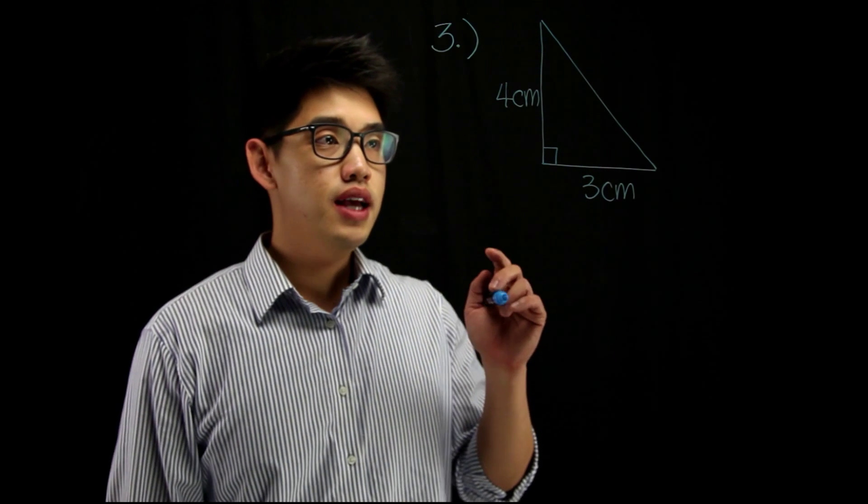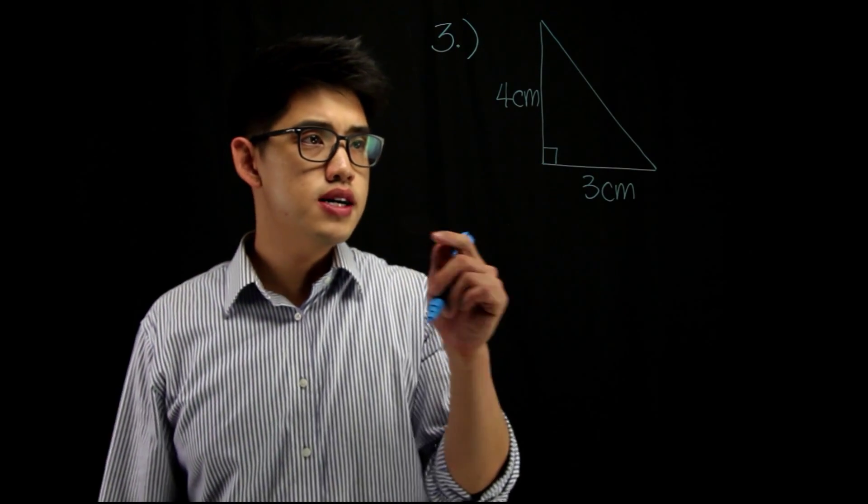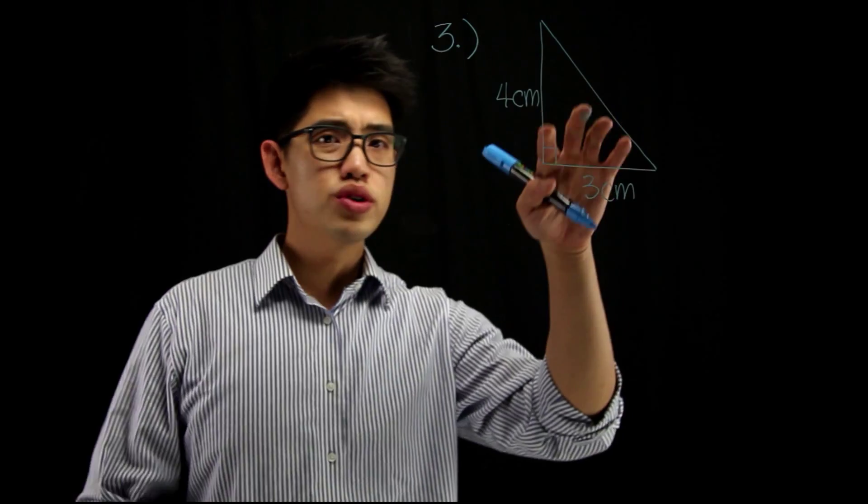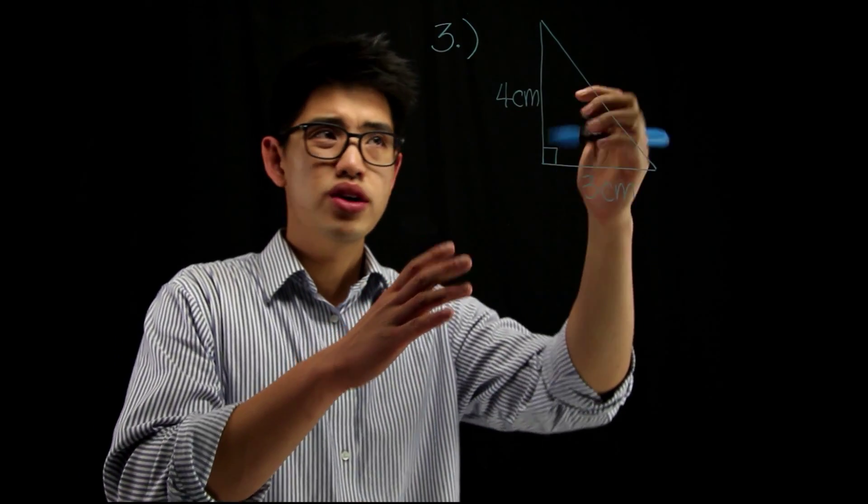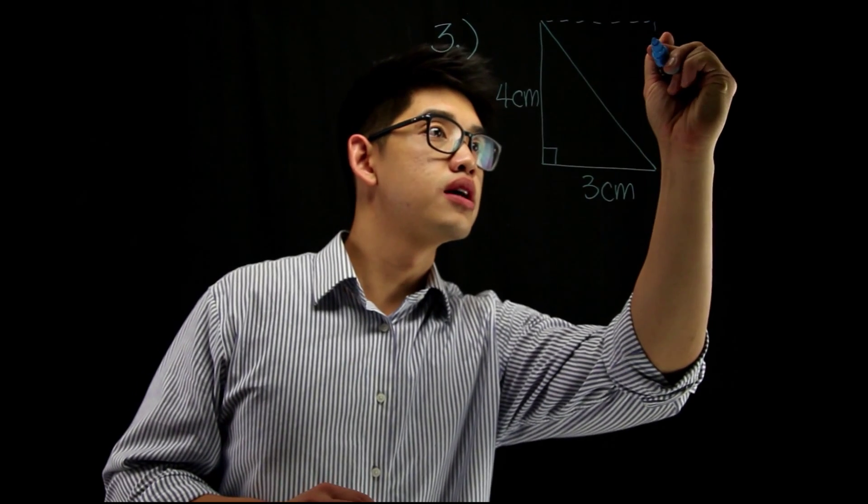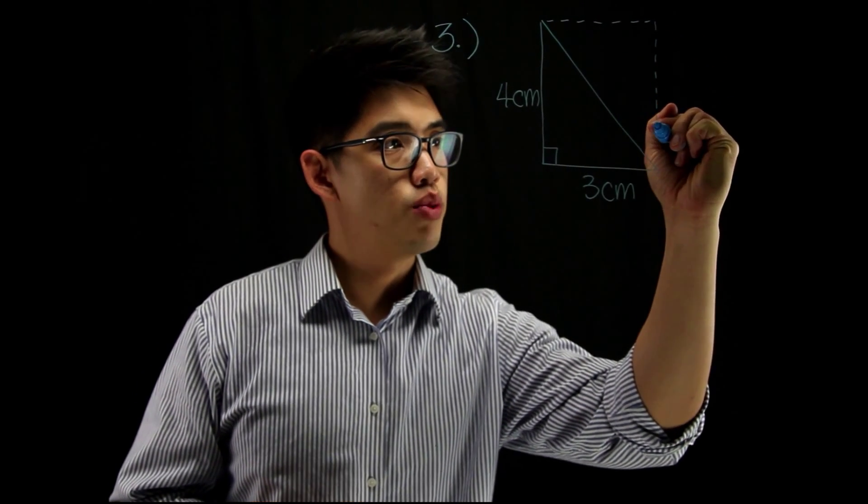For number three, we're going to find the area of this triangle. Let me see. We know how to find the area of a rectangle. And if I were to kind of double this triangle and make it into a rectangle, kind of make it like this, you see how now it becomes a rectangle.